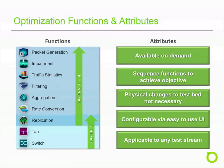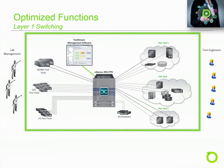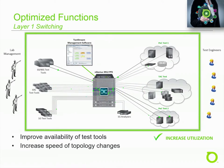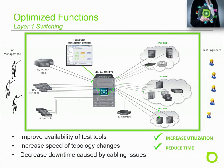Let's take a closer look at some of the functions. First, we have Layer 1 switching. Layer 1 switching enables lab managers to quickly build test topologies from pooled resources. This greatly improves the availability of test tools and increases the speed of topology changes. Since all configuration changes are done remotely via software, downtime caused by failed cables and dirty connectors is nearly eliminated.